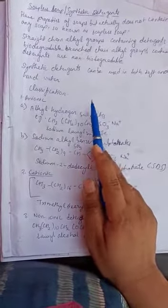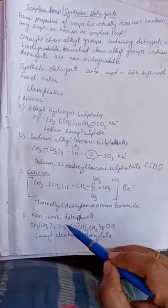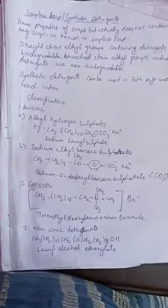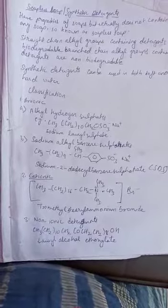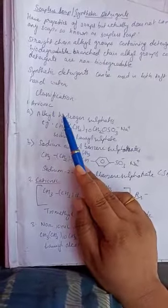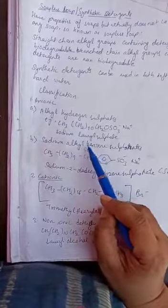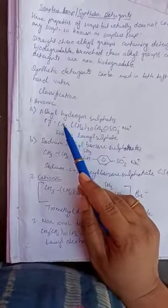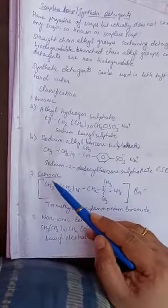Detergents are classified into three types: anionic, cationic, and non-ionic detergents. Anionic detergents are basically the sodium salts of sulfonated long chain alcohols or hydrocarbons. An example of an anionic detergent is sodium lauryl sulfate.